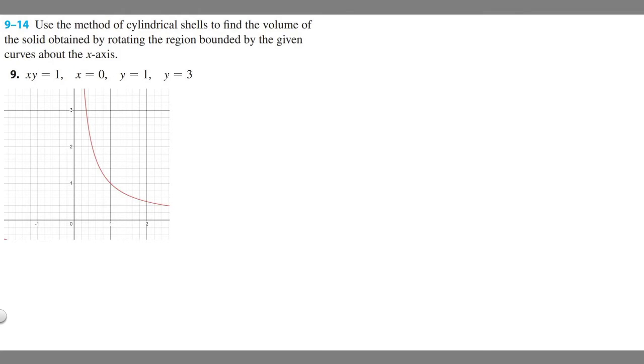In this problem we're told to use the method of cylindrical shells to find the volume of the solid obtained by rotating the region bounded by the given curves about the x-axis. This is number 9 and we're told xy = 1, x = 0, y = 1, and y = 3.